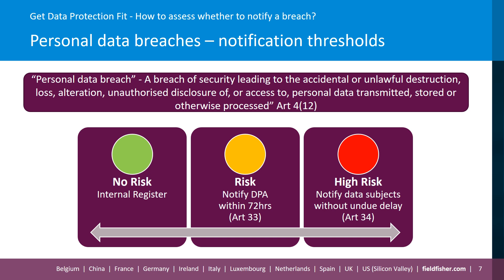If, however, the facts of your breach do not enable you to conclude that a risk to data subjects is unlikely — i.e., you have identified some risk — you have an obligation to notify the personal data breach to your data protection authority without undue delay and where feasible within 72 hours. And finally, if the facts of your breach are likely to result in a high risk to the rights and freedoms of individuals, you are also expected to notify not only the data protection authority, but also the affected individuals.